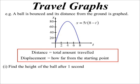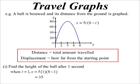Find the height of the ball after 1 second. Of course, because we have an equation, we don't actually need the graph. We can simply sub in t equals 1 and we get the answer of 35. So we know it's 35 metres above the ground.